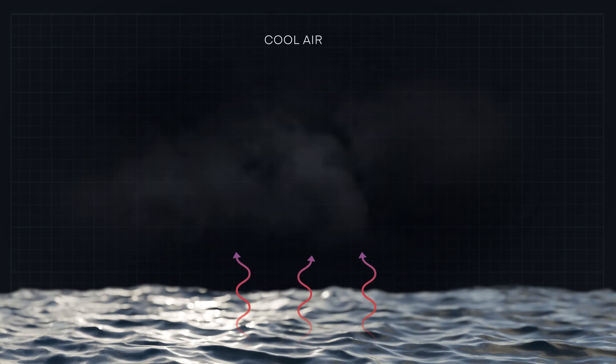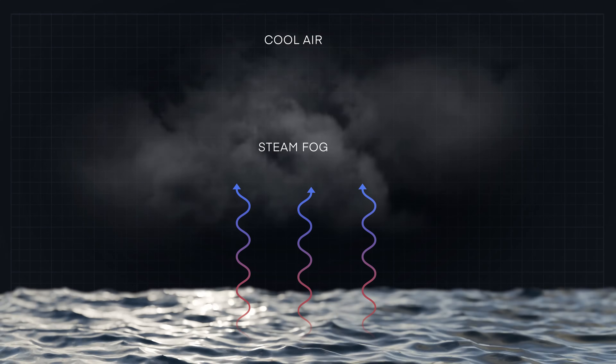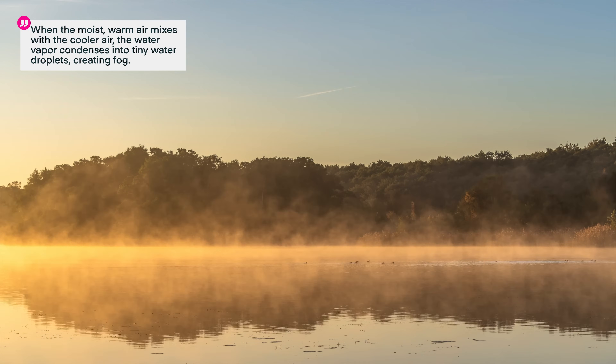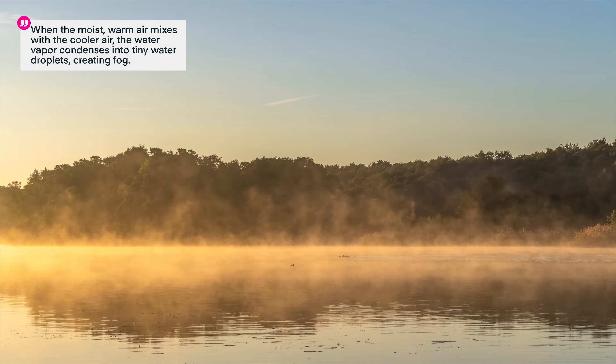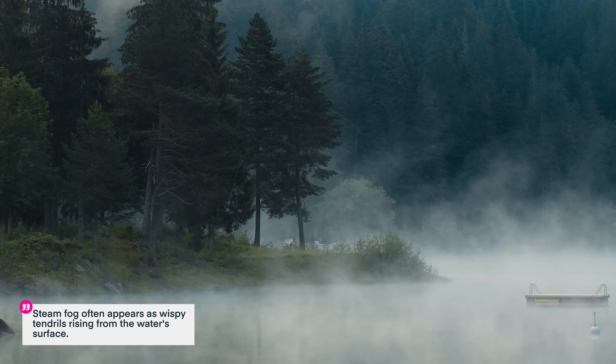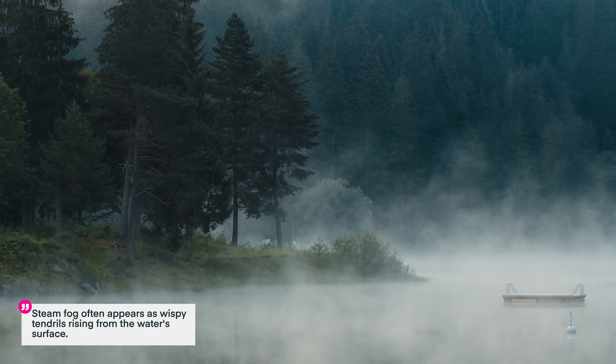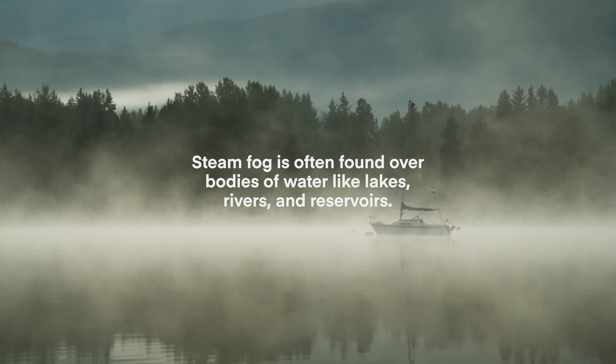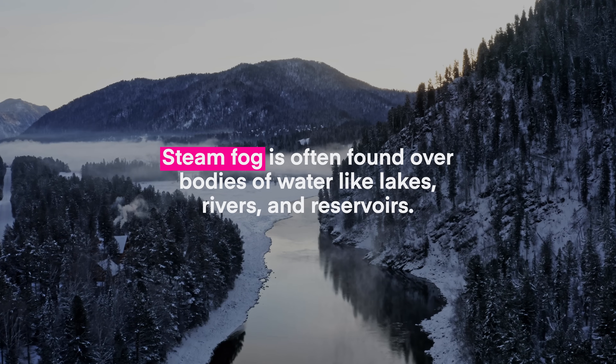Next up is steam fog, also known as evaporation fog. It forms when cold air moves over a warm body of water. The warmer water evaporates into the cooler air above it, increasing the air's moisture content. When the moist warm air is cooled to the dew point temperature by the cooler air, the warm vapor condenses into tiny water droplets, creating fog. This often happens in early fall or late spring when air temperature drops quickly compared to the water temperature. Steam fog looks like wispy tendrils arising from the water surface, resembling steam. You'll often find it over lakes, rivers, and reservoirs.